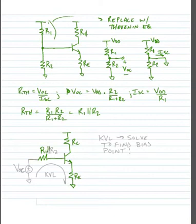At the input, we replace the resistive divider with a voltage source that's equal to VOC, whatever our open circuit voltage was for the Thevenin equivalent circuit, in series with the Thevenin resistance R1 in parallel with R2.